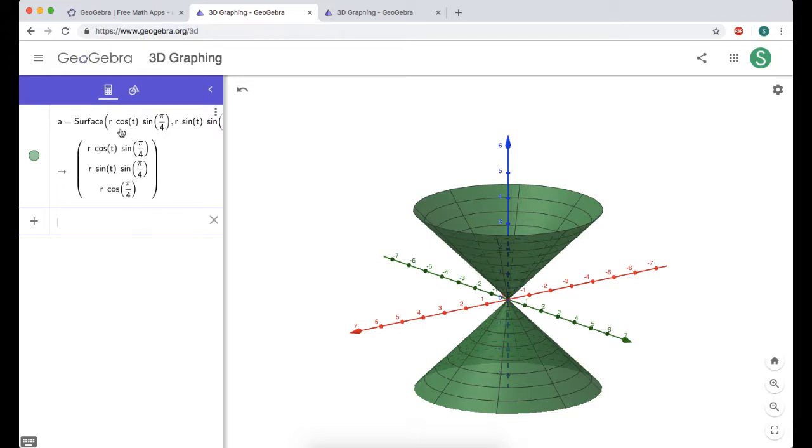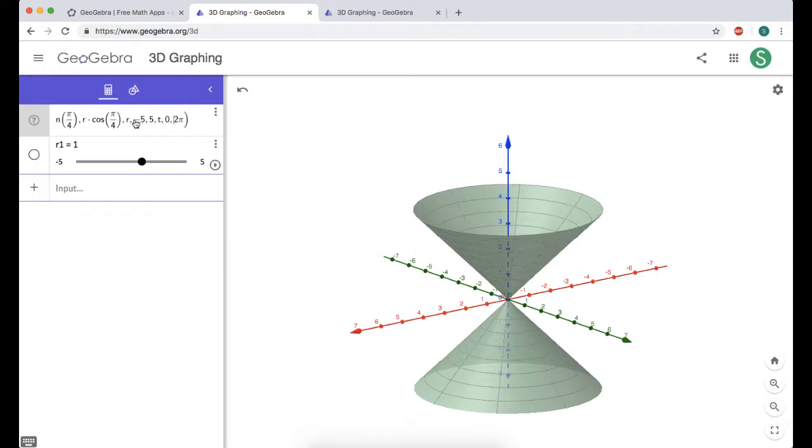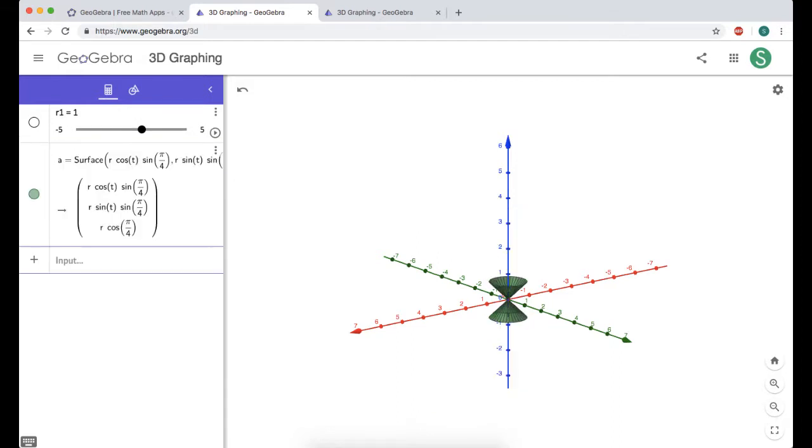There's a couple things I like to do. If there are any parameters anywhere, I like to turn them into sliders. So I'm going to make a slider for r1, and just say create slider. I'm going to actually let it go from negative 5 to 5. I'm going to go up here and edit my equation, and have r go from negative r1 to r1. And press enter.